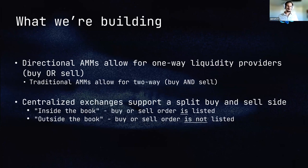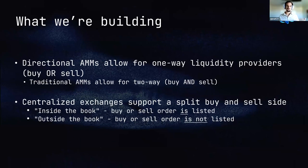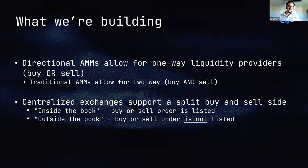Coming on chain, I started playing around with yield farms and realizing there's kind of a void or white space for advanced tooling. I didn't really feel like the tooling that was present really fit the user base. So what we're building is a directional AMM that allows users to place one-way liquidity positions where they can buy or sell — offsetting against what's offered today, where an LP position can only buy and sell both ways.